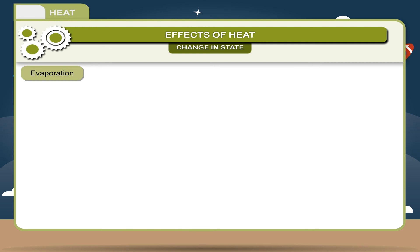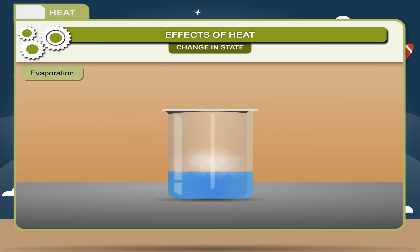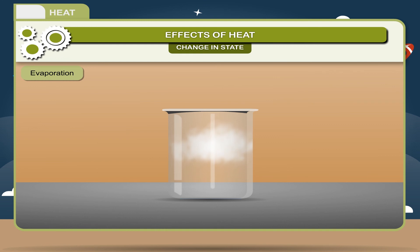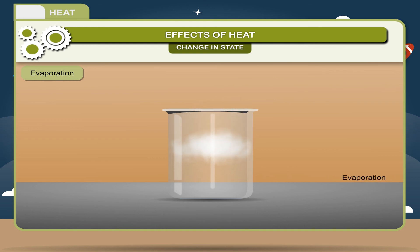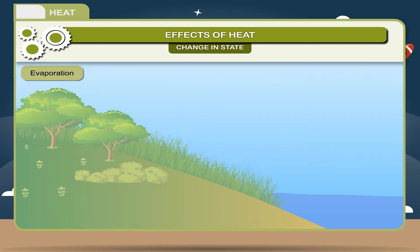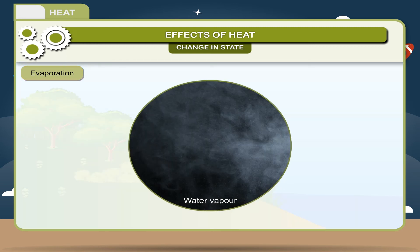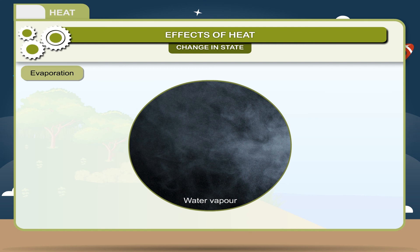Evaporation: The change of a substance from its liquid state to its gaseous state at any temperature is called evaporation. For example, water vapor is always present in the atmosphere due to the process of evaporation. Hot surroundings, movement of air, and large surface areas speed up the process of evaporation.